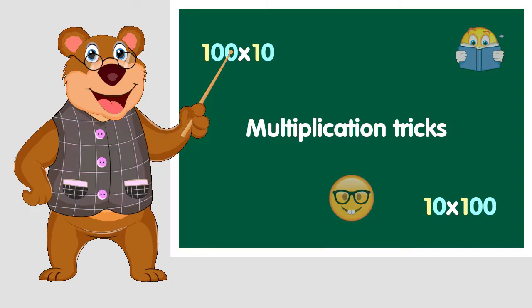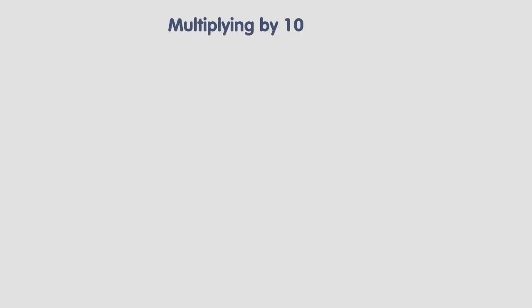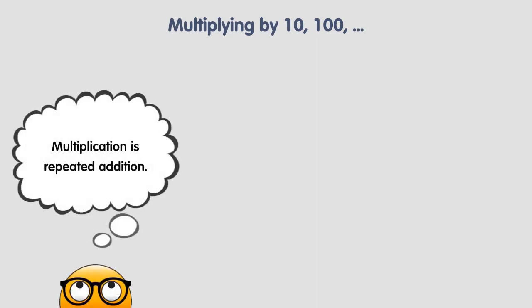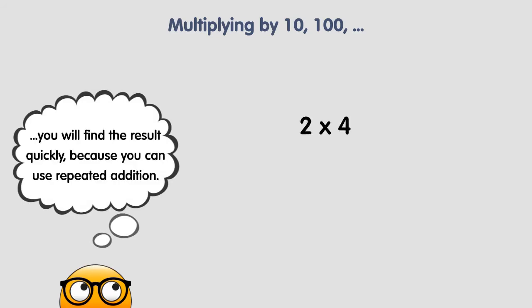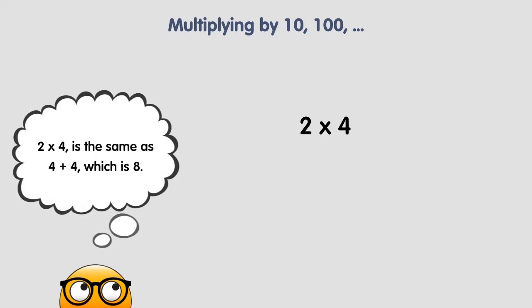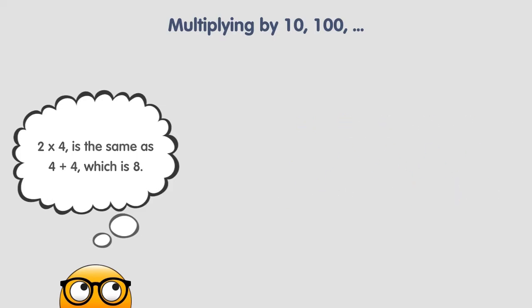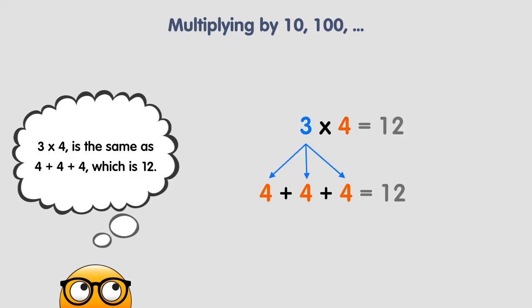Today we are going to be learning some multiplication tricks. Multiplication is repeated addition. If you are asked to multiply 2 times 4, you will find the result quickly because you can use repeated addition. 2 times 4 is the same as 4 plus 4, which is 8. 3 times 4 is the same as 4 plus 4 plus 4, which is 12.